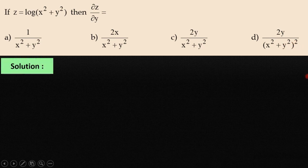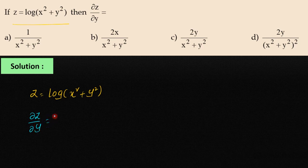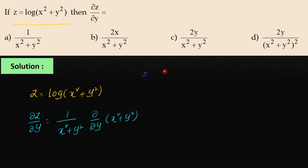Let us find this. Given z = log(x² + y²). Partially differentiating z with respect to y, we get ∂z/∂y = differentiation of log f(x) is 1/f(x) into f'(x), that is 1/(x²+y²) into ∂/∂y of (x²+y²).